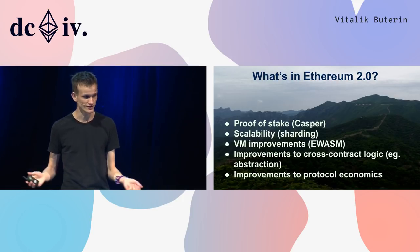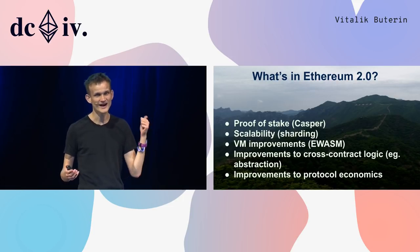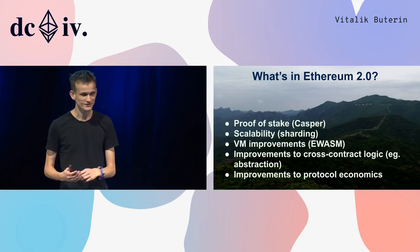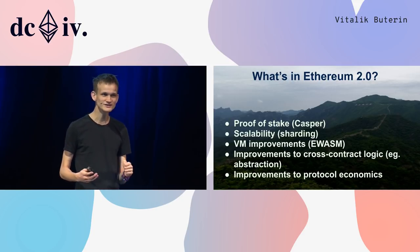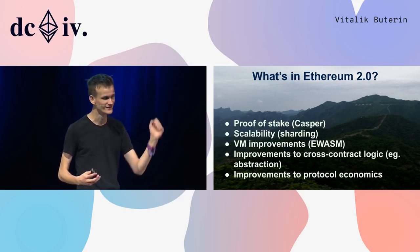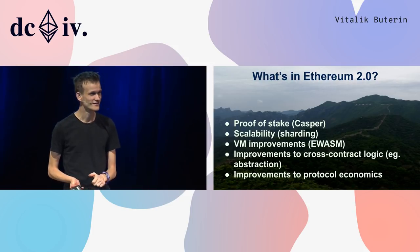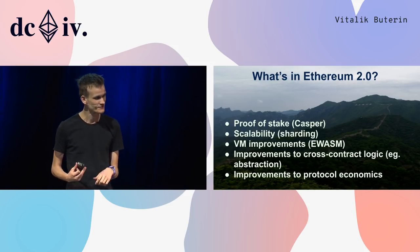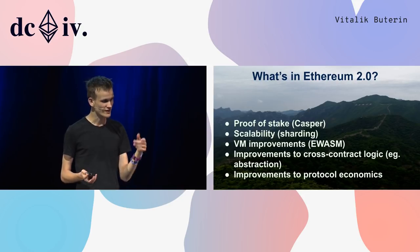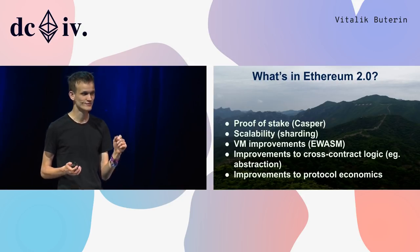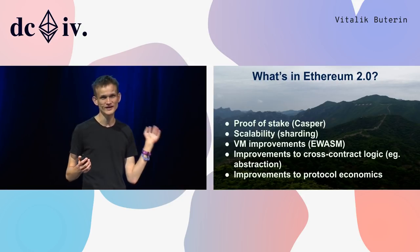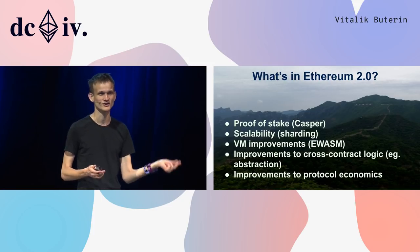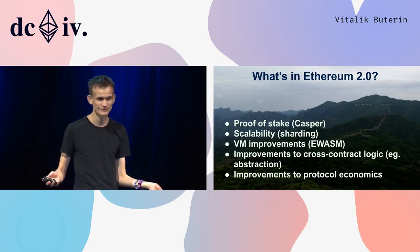These features include proof of stake, Casper, scalability, sharding, virtual machine improvements, EWASM, improvements to cross-chain and contract logic, improvements to protocol economics — and really the list goes on and on.